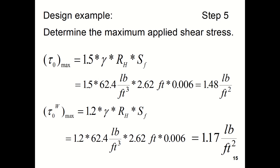Now we would determine the maximum applied shear stress. So τ₀max, which would be on the bottom of the channel, is 1.5 times γ times the hydraulic radius times the friction slope, which we are assuming normal depth in this case, so we will just use the bottom slope.